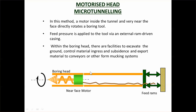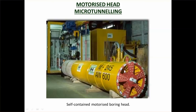A similar method to pipe jacking is micro tunneling. The difference is that you have a motorised head — a little micro tunneling machine similar to the tunnel boring machines used for major projects, except these are small versions, maybe 600 millimetres in diameter. A risk is that if you get stuck or there's a tunnel collapse, you can lose your machine, which is why this technology took longer to become popular. The micro tunneling machine shown is about a metre in diameter, with cutting heads, motorised components, and a conveyor to remove excavated material back to the head of the bore.